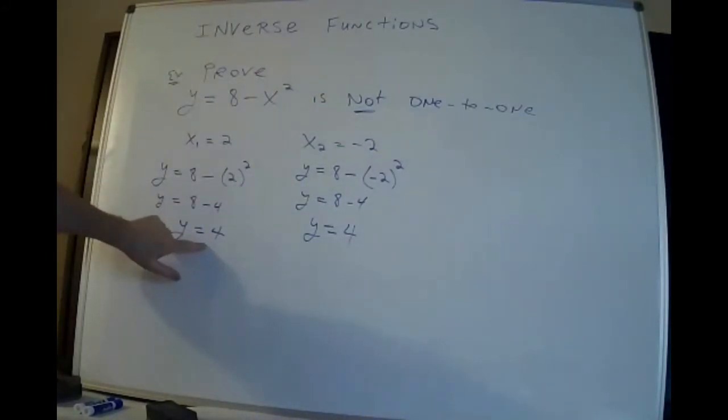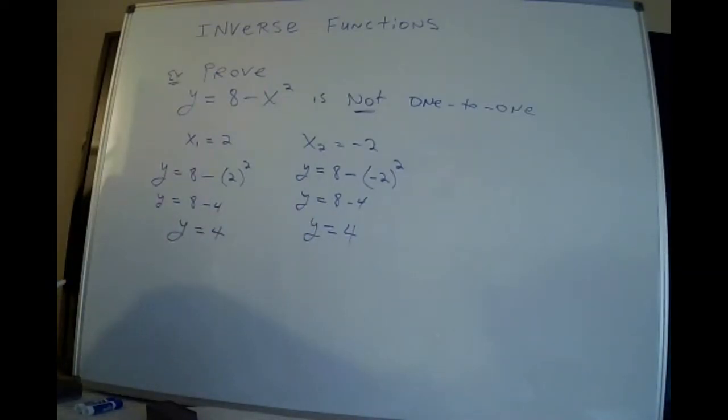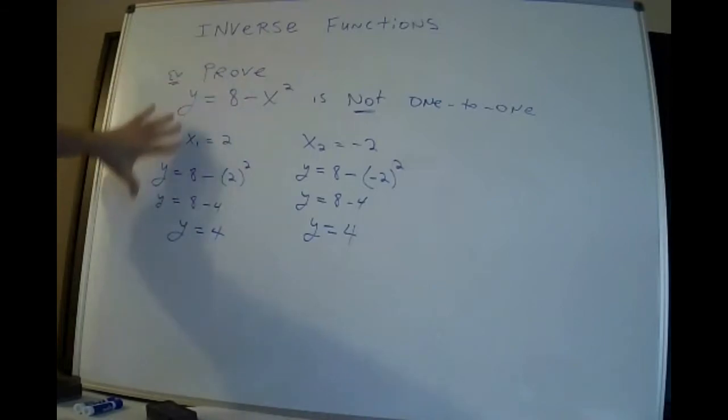I have just shown that it's not one-to-one. This can't happen. I can't get the same y value twice for different numbers that I plugged in. So this is all you have to do to show it to me. Pick two different numbers for x that will give you the same y value, and then you've shown that it's not one-to-one. The y values did repeat and they're not supposed to repeat. Two different numbers, same y value, and then you've shown me that it's not one-to-one.